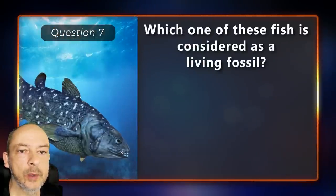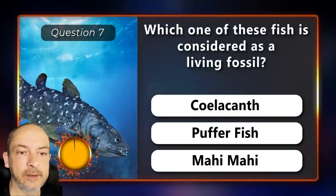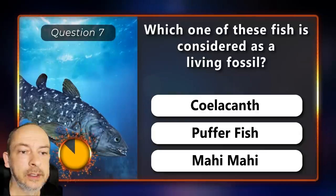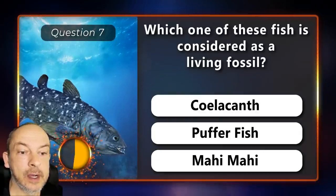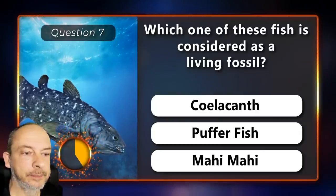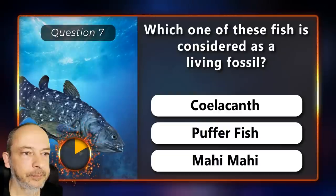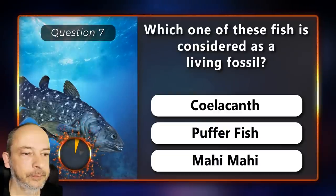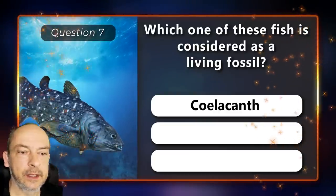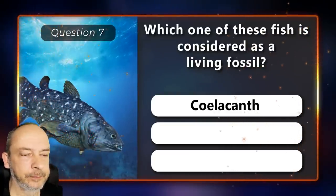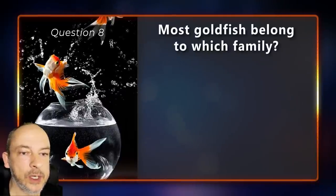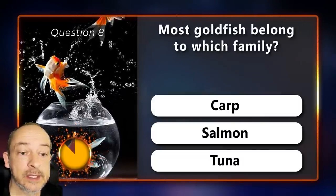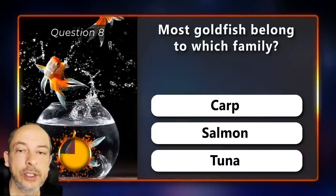Which one of these fish is considered a living fossil — the coelacanth, the puffer fish, or the mahi-mahi? The coelacanth. Most goldfish belong to which family — carp, salmon, or tuna?